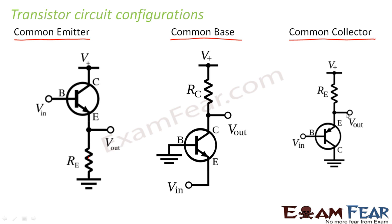In the third one collector is the common one. So here if you see collector is grounded. So base collector circuit forms the input circuit and emitter collector circuit forms the output circuit.